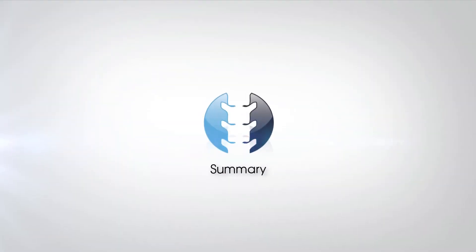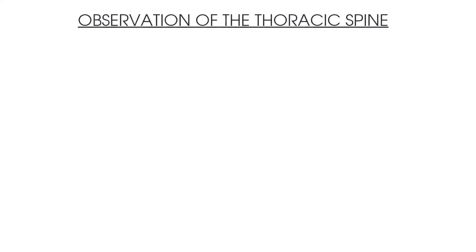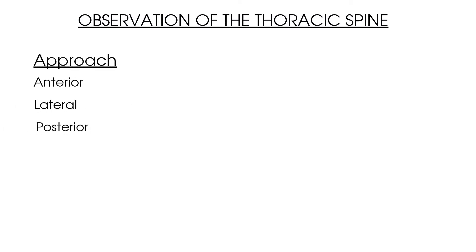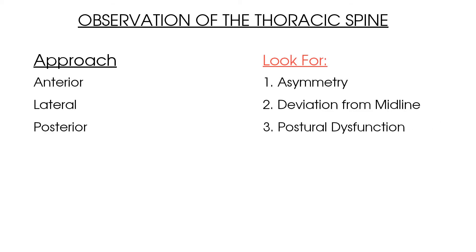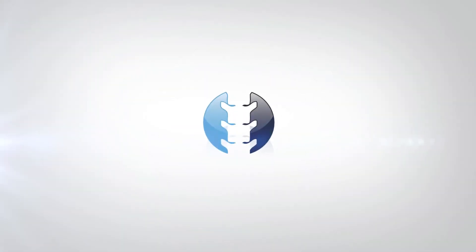Thoracic observation summary: complete your observation in an anterior, lateral, and posterior view. Look for asymmetry and deviation from the midline, paying attention to the level of the ears, the spine of scapula, and the hips. Be aware of the presentations of postural dysfunction, scoliosis, and excessive thoracic kyphosis and its link to osteoporosis. That concludes our video on observation of the thoracic spine — from here we recommend looking at our other videos in the Clinical Physio catalogue such as active range of motion testing or resisted tests for the thoracic spine.